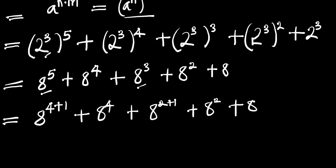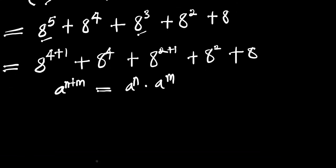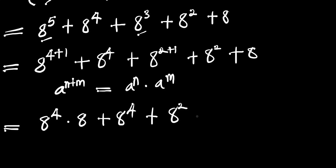Now the next thing we are going to do is to apply this identity: if you have 8 to the power of n plus 8 to the power of m, we are going to apply the identity. We are going to have 8 to the power of 4 times 8, plus 8 to the power of 4, plus 8 to the power of 2 times 8, plus 8 to the power of 2, plus 8.